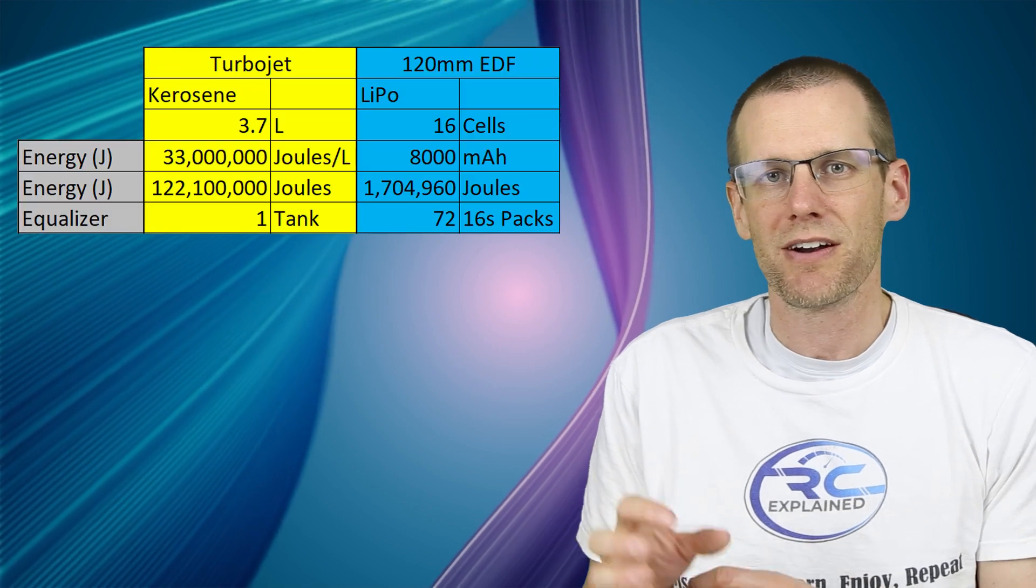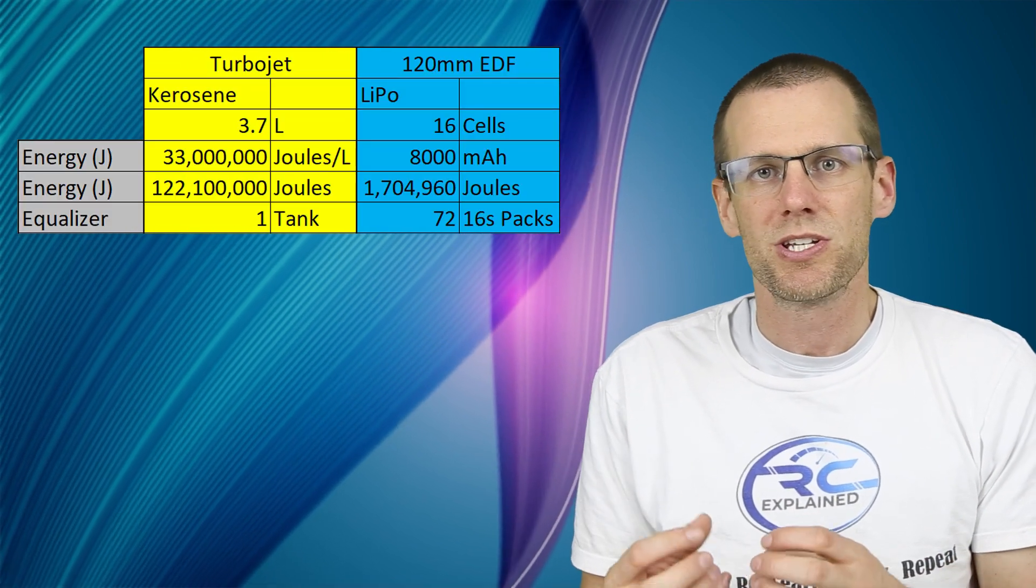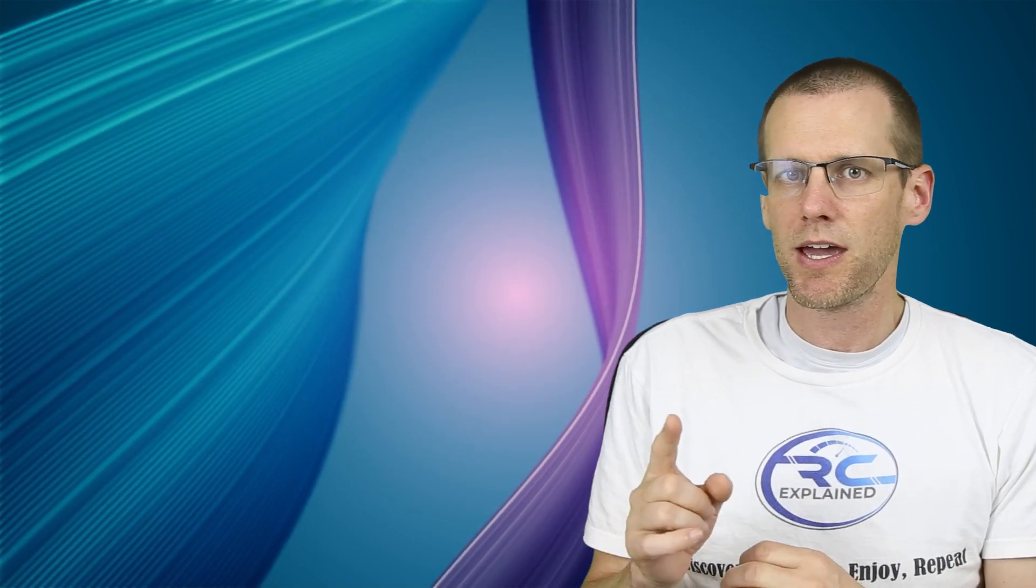If we had an unlimited supply of lithium polymer battery packs, and of course they weighed nothing, we would have to have 72 of our 16 cell eight amp hour packs in order to equalize the amount of energy that this jet fuel actually has. Now I thought about this here comparing the 72 packs that we would otherwise have in lithium polymer format versus our one single tank of jet fuel. And there's a big thing within these two power systems.